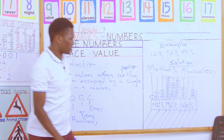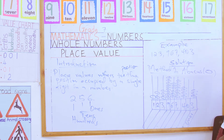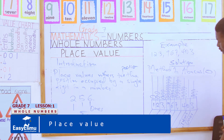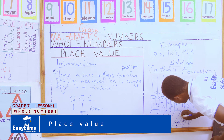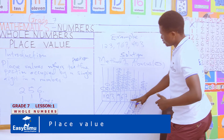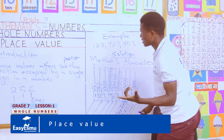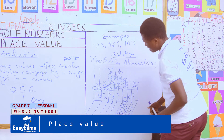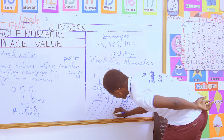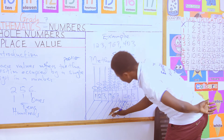Now we read off the place values. The place value of digit 3 is ones. The place value of digit 0 is tens. The place value of digit 4 is hundreds. The place value of digit 7 is thousands. Note: if the space provided cannot accommodate the full label, you may use initials — for example 'T' for tens.